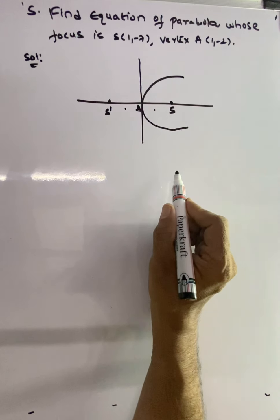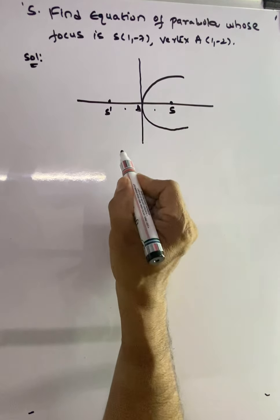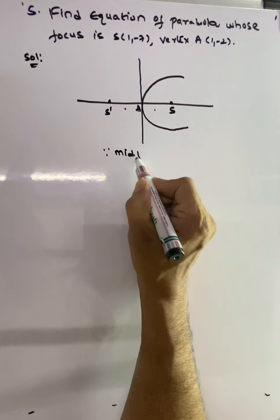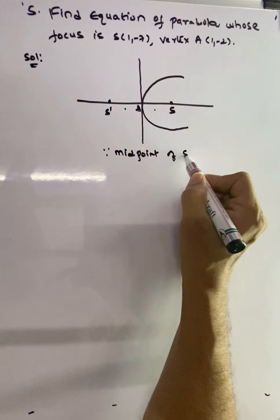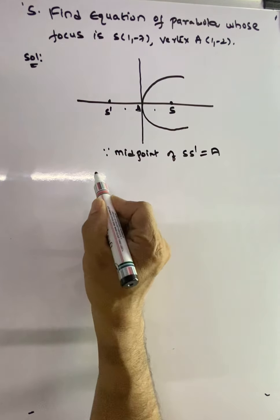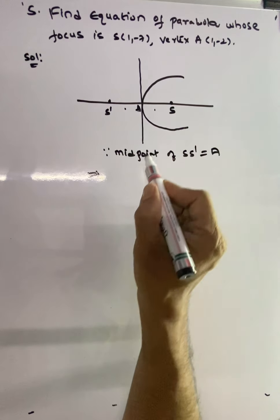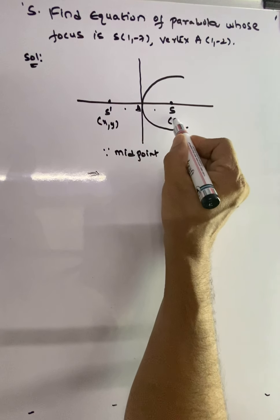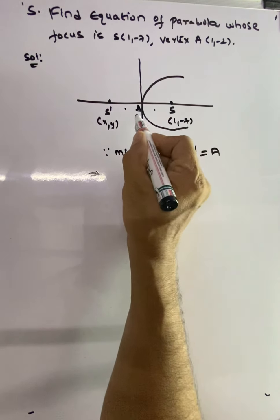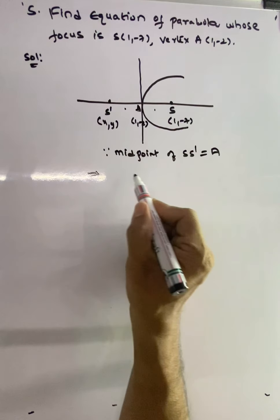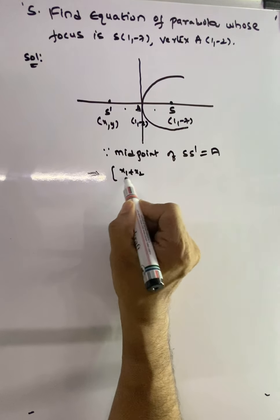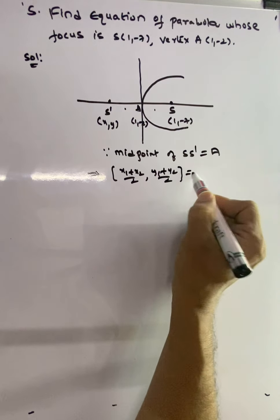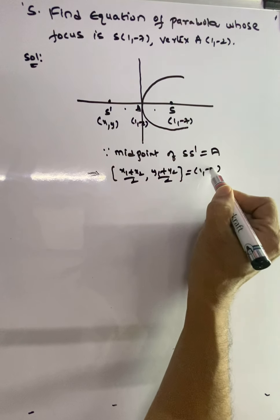We use the midpoint formula: midpoint of S and S' equals A. Let S' be (X, Y). We have S = (1, -7) and vertex A = (1, -2). So midpoint formula gives us (X1 + X2)/2 and (Y1 + Y2)/2 equals vertex A, which is (1, -2).